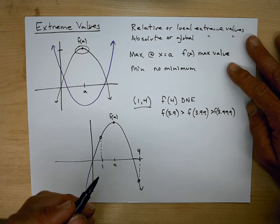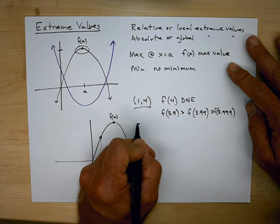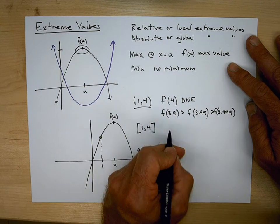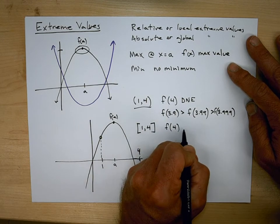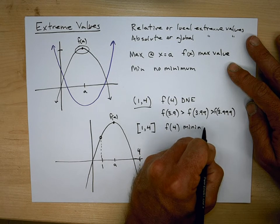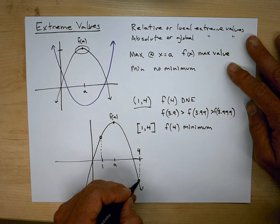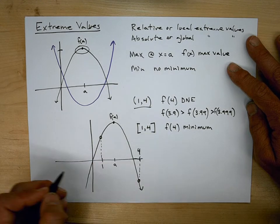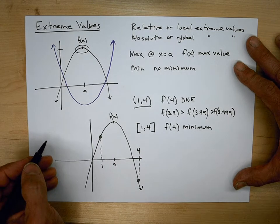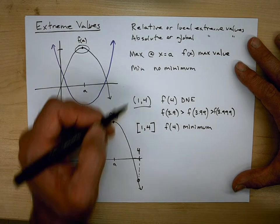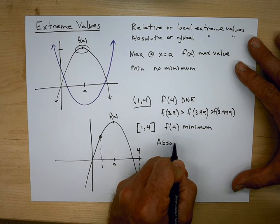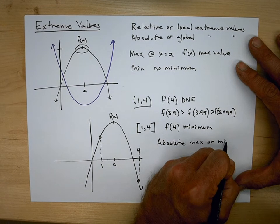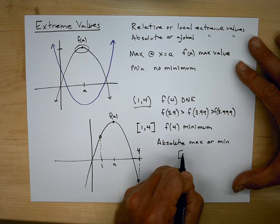What we would need is the closed interval. On the closed interval, we could just say f of 4 is our minimum. We can just include that point — we know that's the lowest point. If we go any past 4, we're no longer on the interval. So one way to guarantee that we have an absolute max or min is to look on a closed interval.